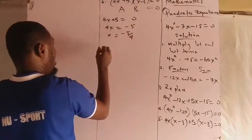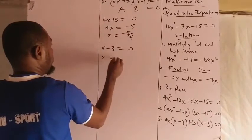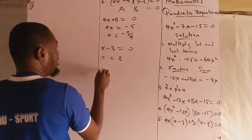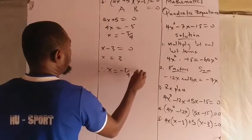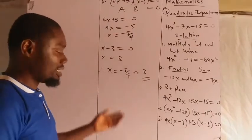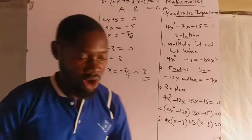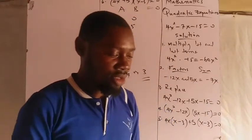Then we have x - 3 = 0, where x alone is equal to 3. Therefore, the values of x are -5/4 or +3. These are the two numbers that are the values or the roots of x. That solves the problem given.